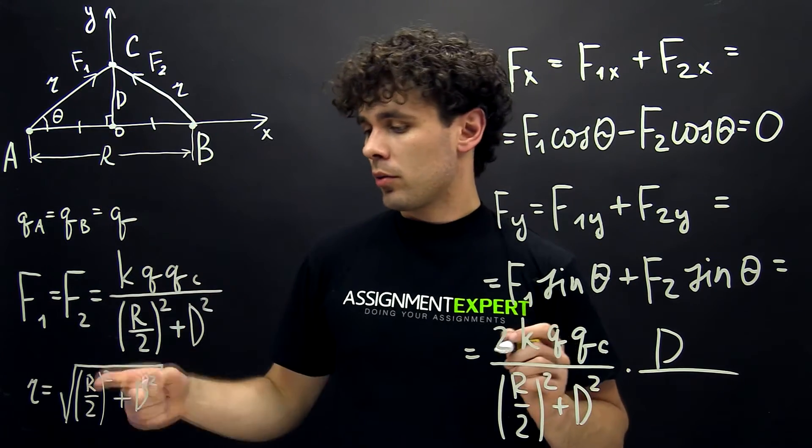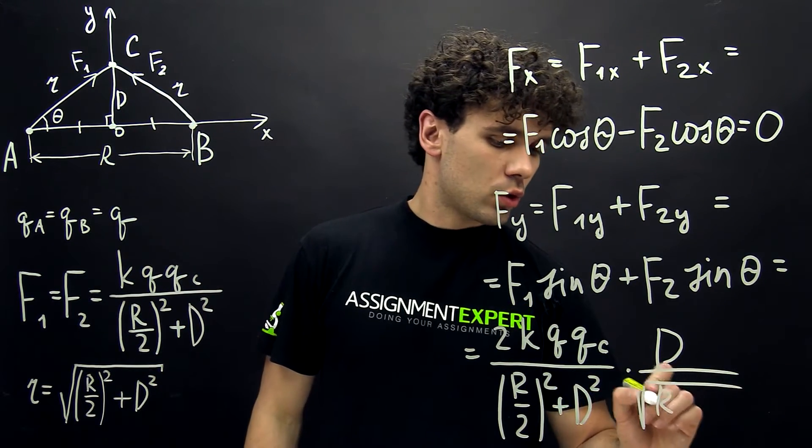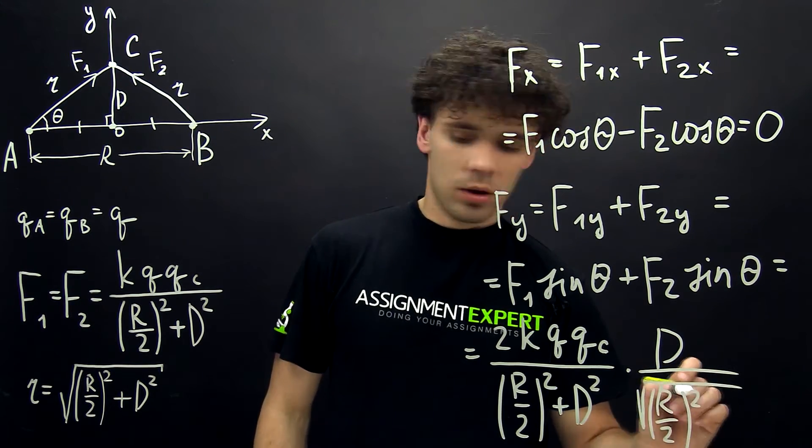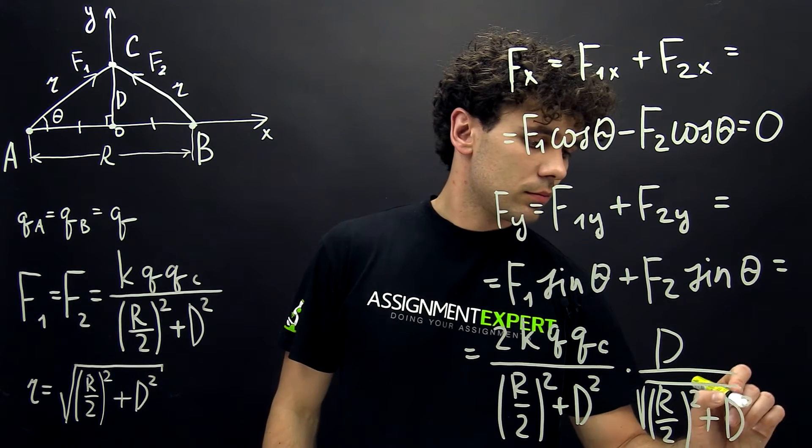divided by R, which is the square root of (R over 2) squared plus D squared.